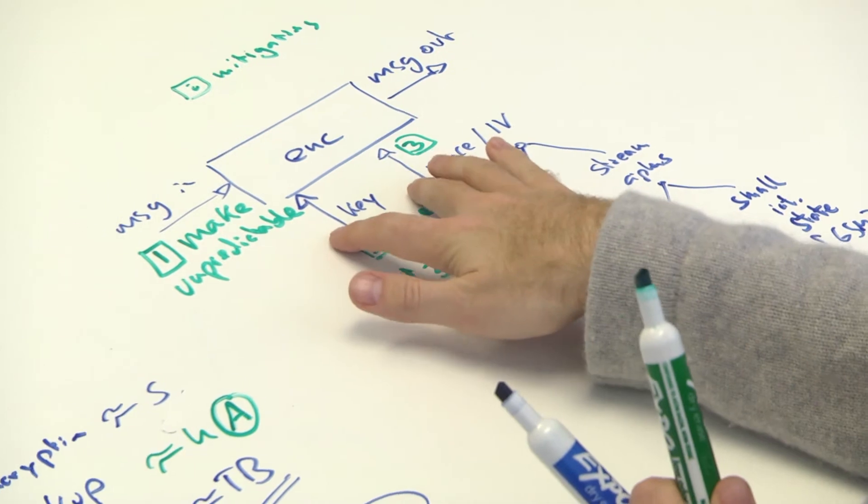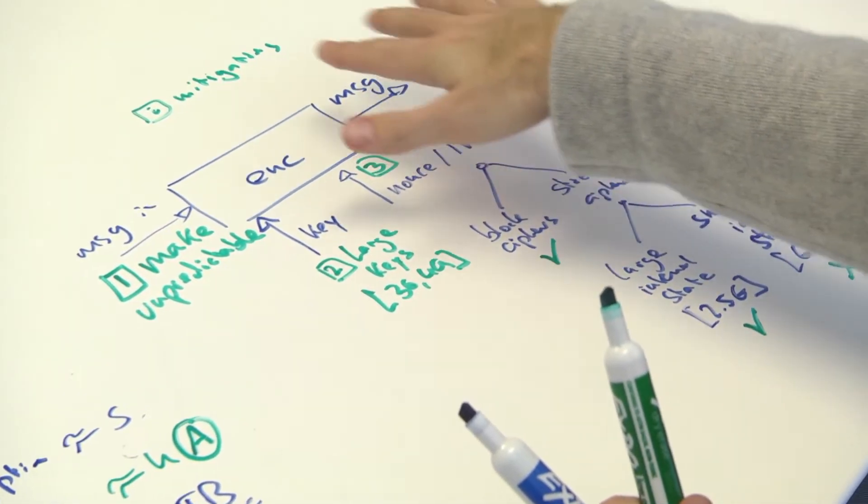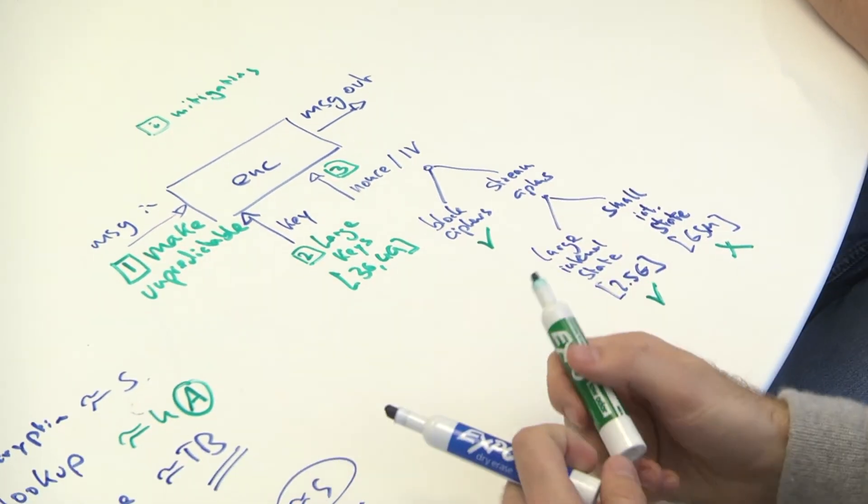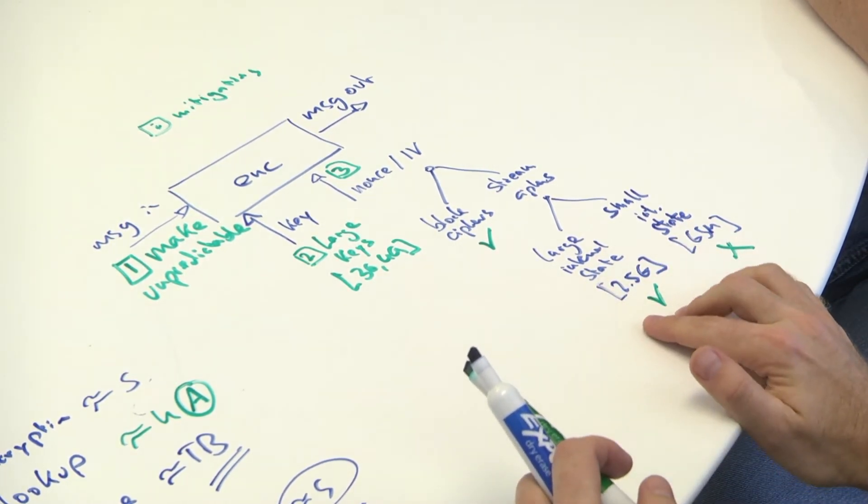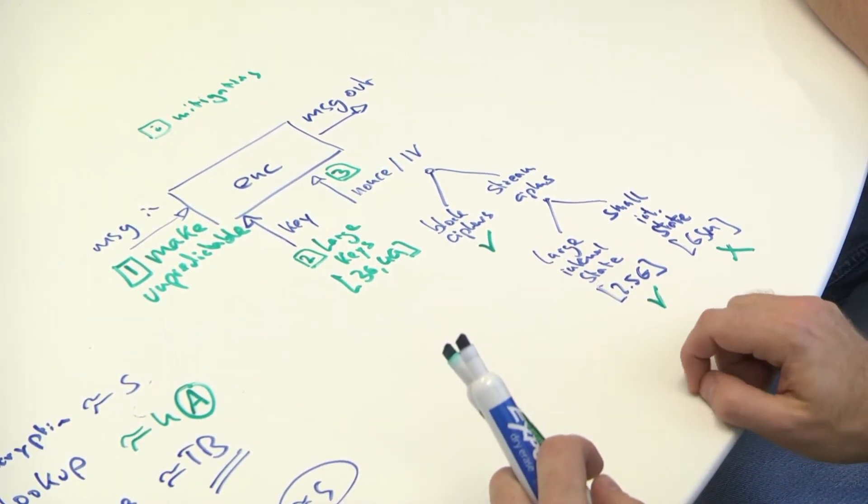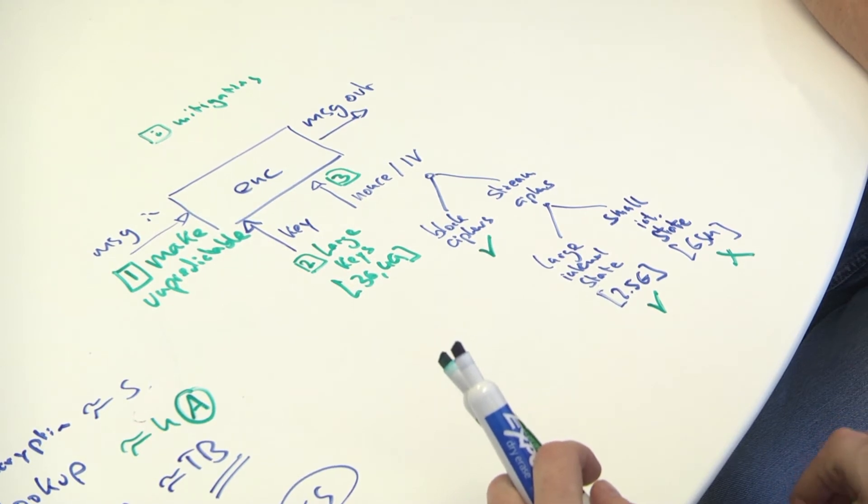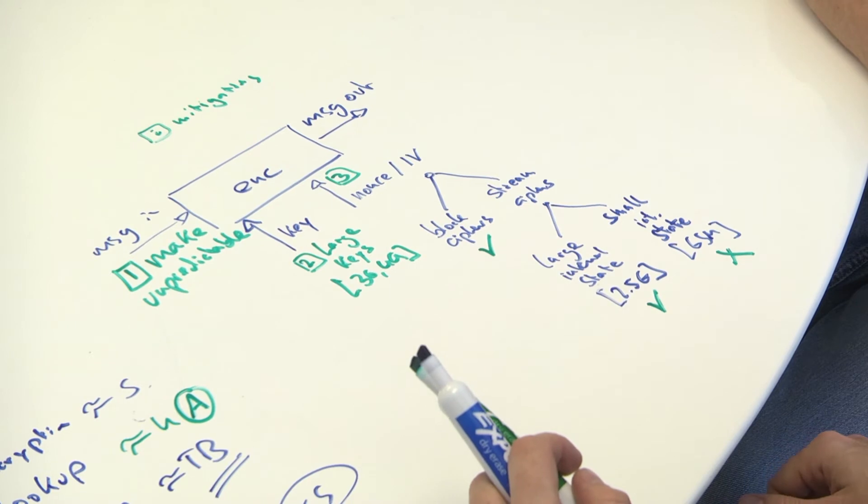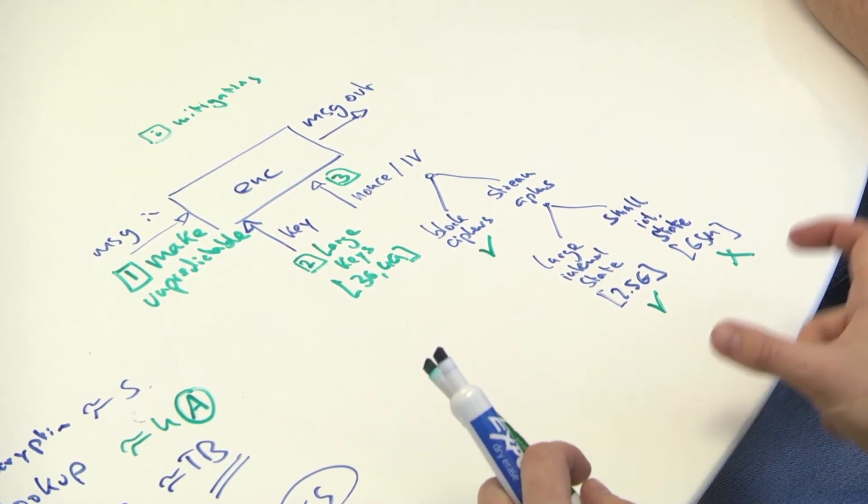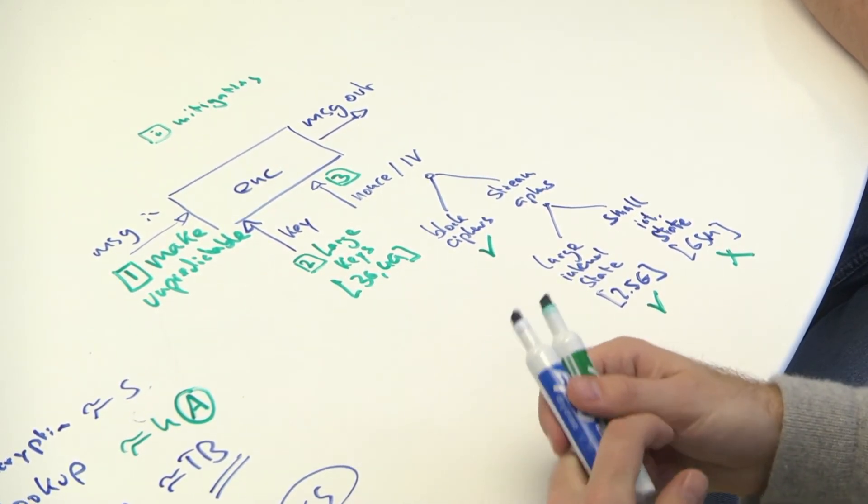Message in, the key, and the message out, as well as the internal state. Everything is 64 bits in GSM. And, of course, adding an internal state, a larger internal state, doesn't come at a great cost. It takes a few more flip-flops in a hardware implementation or slightly larger words in a software implementation.